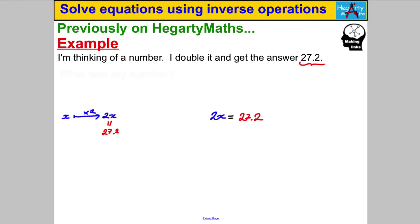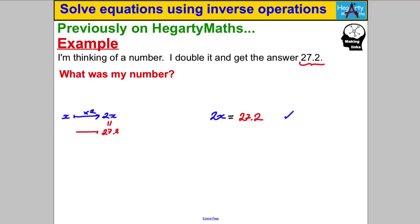Now what's different about this video is the word 'solve' — someone is going to ask us what was my number. Before we just formed the equation; now we've got to find the original number, we have to find X. You thought of a number, you doubled it and got 27.2. To find the number, I would half or divide 27.2 by 2, because you undo or do the inverse operation — the opposite of multiplication by 2. So 27.2 divided by 2 gives us 13.6, and that is X.